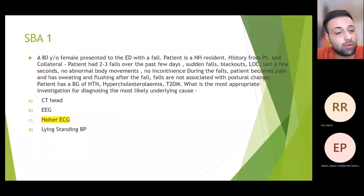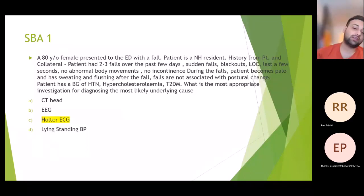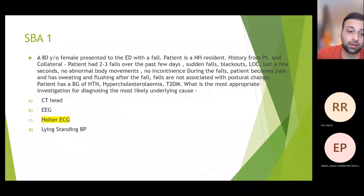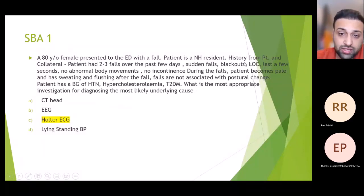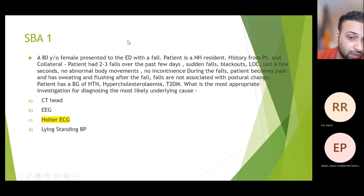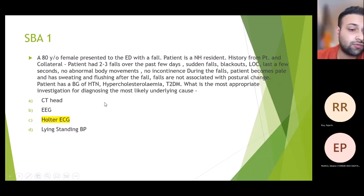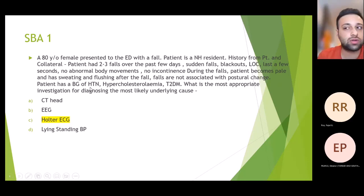The answer is a Holter ECG. The most likely underlying cause is an arrhythmia, possibly a bradyarrhythmia. The key clues are loss of consciousness followed by pallor, flushing, and sweating after the fall — this corresponds to an adrenaline rush as the body compensates when the brain is not getting proper blood supply. A Holter ECG is used to detect the arrhythmia. A CT head is also important, but the question asks for the most likely underlying cause.